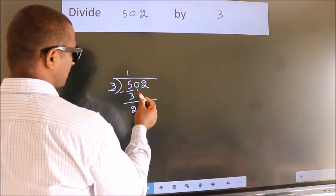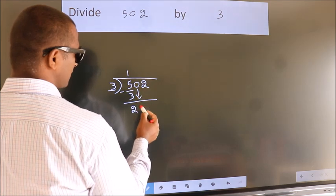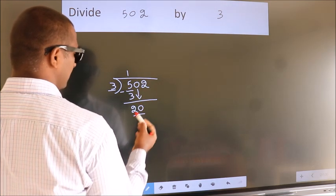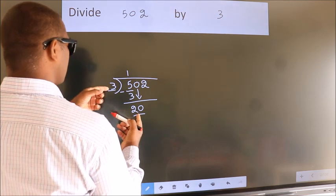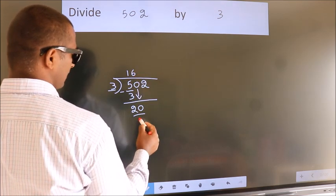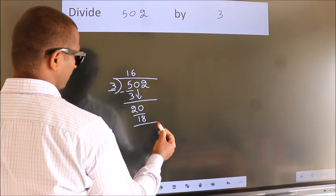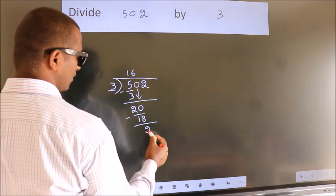After this, bring down the beside number. So 0 down. So 20. A number close to 20 in 3 table is 3 6 18. Now we subtract. We get 2.